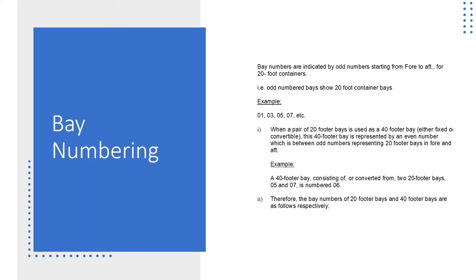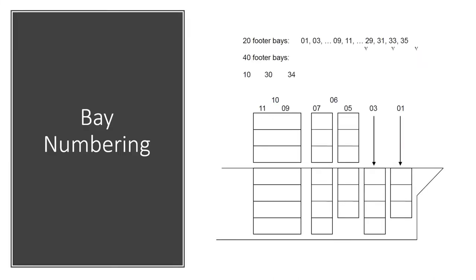When a pair of 20-footer bays is used as a 40-footer bay, that 40-footer bay is represented by an even number. For example, a 40-footer bay converted from 20-footer bays between bay 5 and bay 7 is numbered bay 6. You can see this in the picture — bay 1, 3, 5, 7, 9, 11 are all 20-foot containers, while bay 6 or bay 10 (even numbers) are assigned to 40-foot containers.